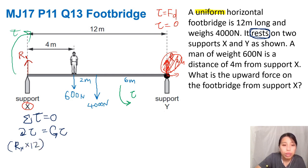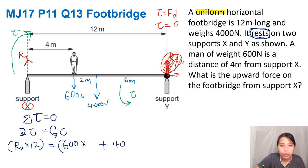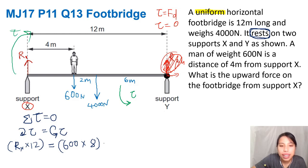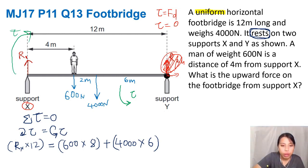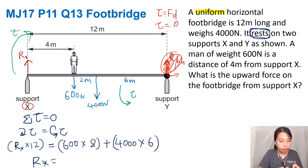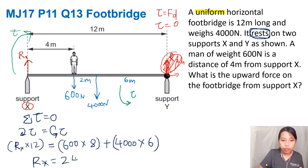Only one clockwise force to support everything. Now anti-clockwise: 600 newtons — how far to the pivot? 12 minus 4 equals 8 meters. Plus 4000 newtons — how far from the pivot? 6 meters. So the torque equation is: Rx times 12 equals 600 times 8 plus 4000 times 6, divided by 12. That gives us 2400 newtons.